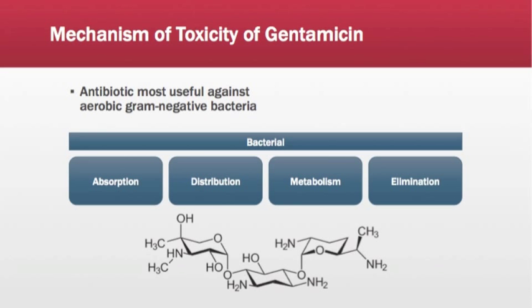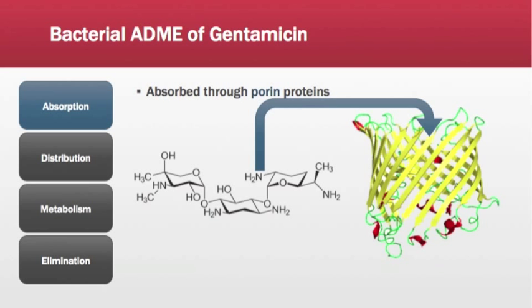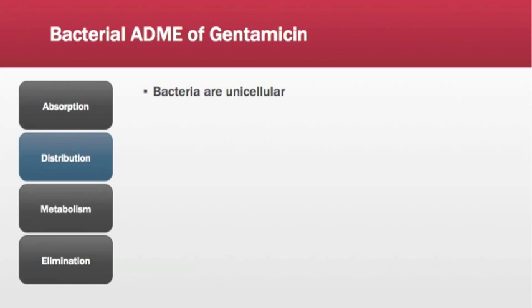In order to truly understand the toxicity and the wonder that is gentamicin, we must explore the bacterial ADME of gentamicin. In bacteria, gentamicin is absorbed through proteins called porins. These are beta-barrel proteins that act as pores through which molecules like sugars, ions, and amino acids can freely diffuse. They are present in the membranes of gram-negative bacteria, some gram-positive bacteria, and mitochondria. Due to the unicellular nature of bacteria, once gentamicin enters through a porin, no further distribution is necessary.